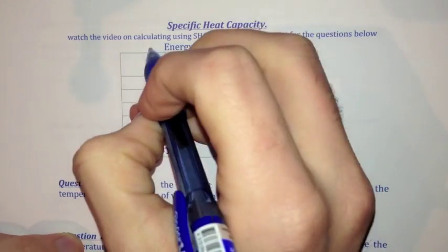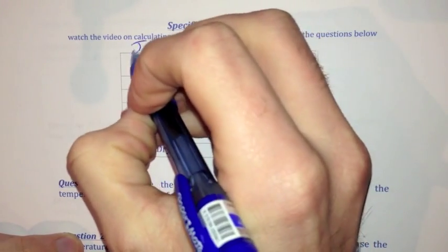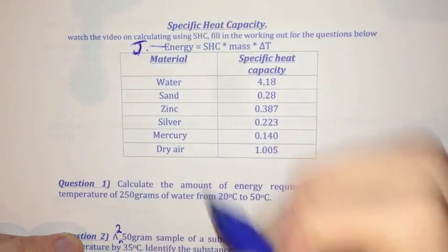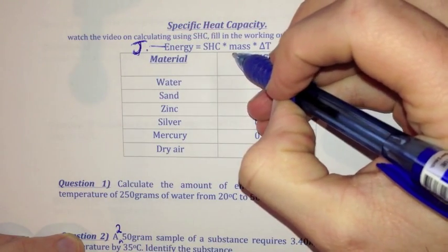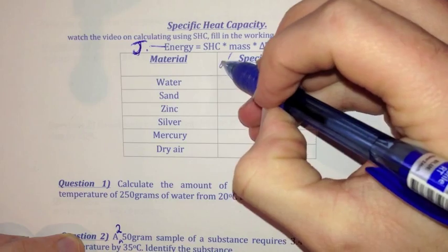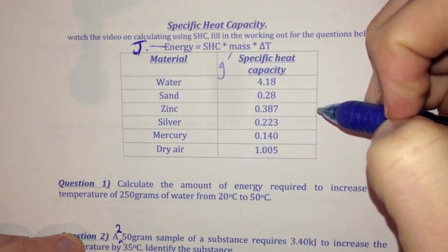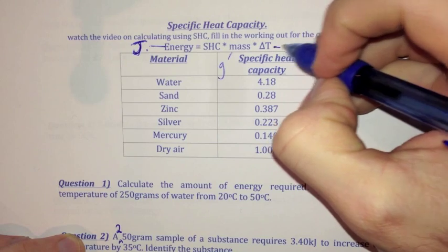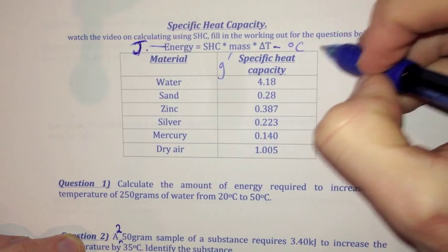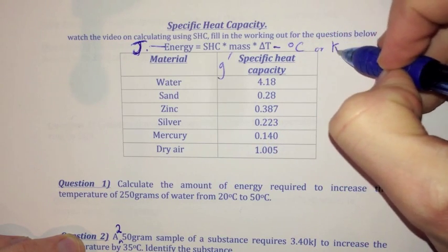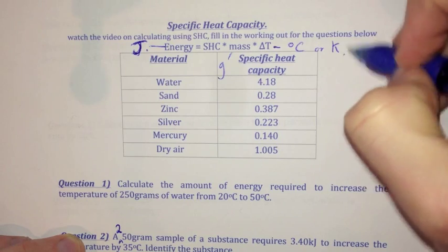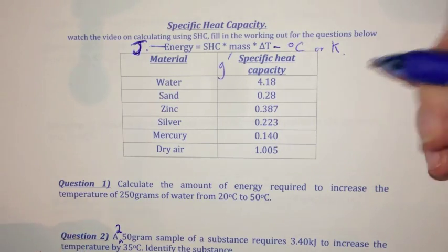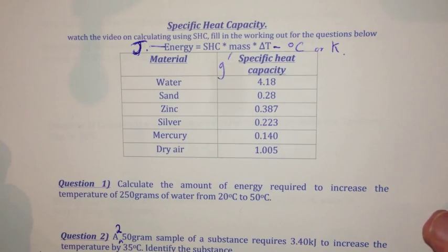Energy in this equation is measured in joules — just plain old joules, the measure of energy. Mass is always measured in grams in a specific heat capacity equation, and temperature is always measured in degrees Celsius, or Kelvin as well. I won't go into Kelvin, but I'll put it down for people who know what Kelvin is. So let's go have a look at the first question.